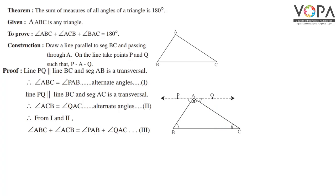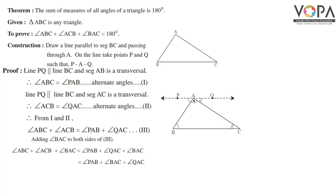From 1 and 2, adding them: angle ABC plus angle ACB is equal to angle PAB plus angle QAC — numbered as 3. Now adding angle BAC to both sides of point 3, we have: angle ABC plus angle ACB plus angle BAC is equal to angle PAB plus angle QAC plus angle BAC.